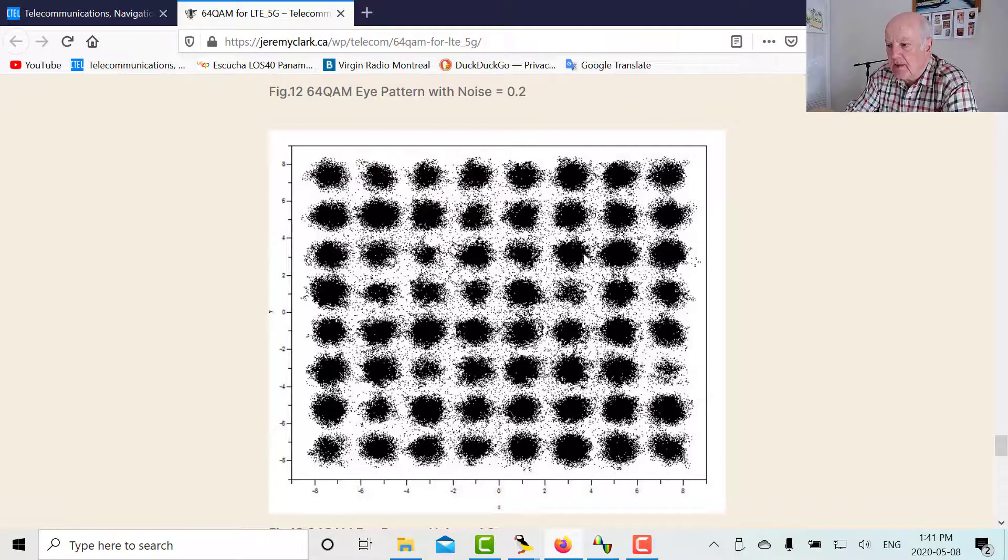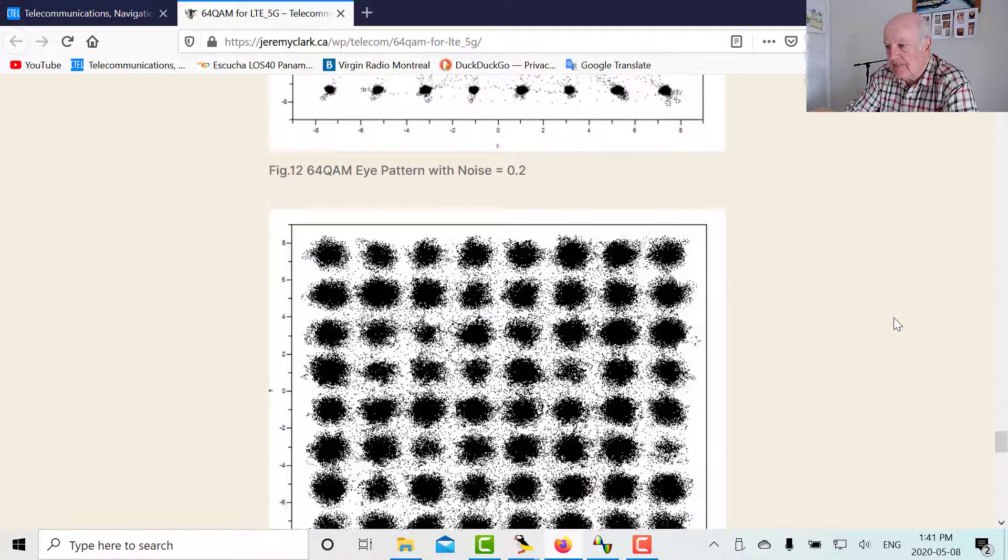Now, of course, as we discussed earlier, if there's a phase hit caused by, let's say, frequency translation, or perhaps even by a reflection or something like that, then let's say that vector could easily swing either way. So that's another problem with QAM.